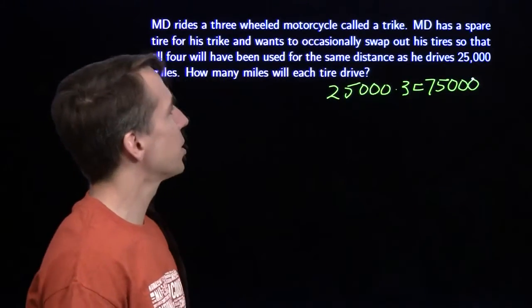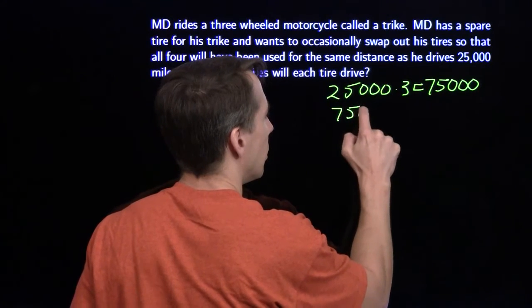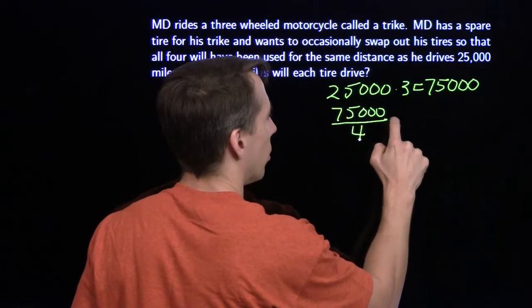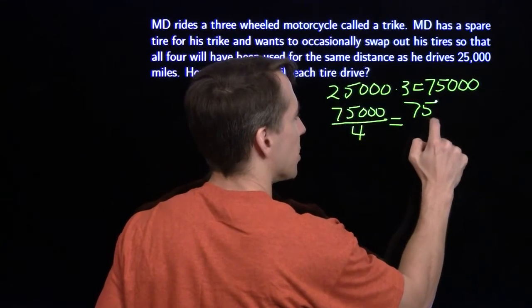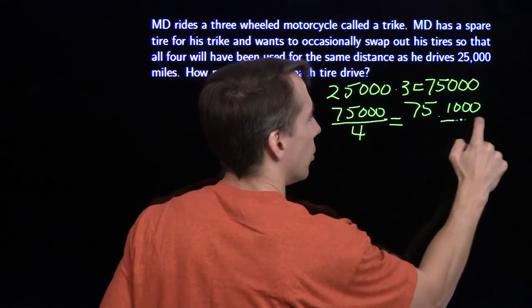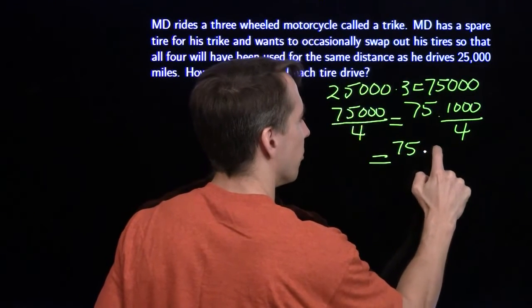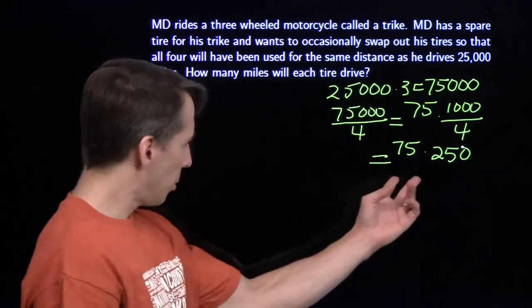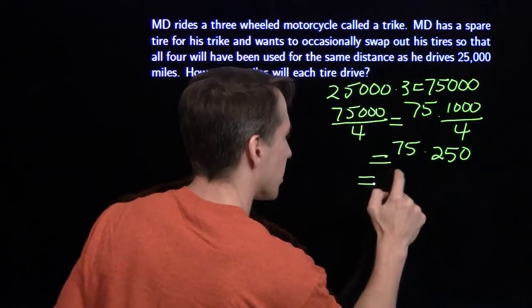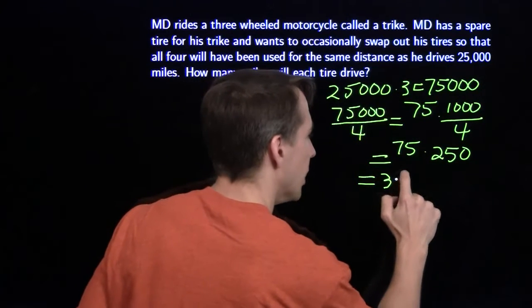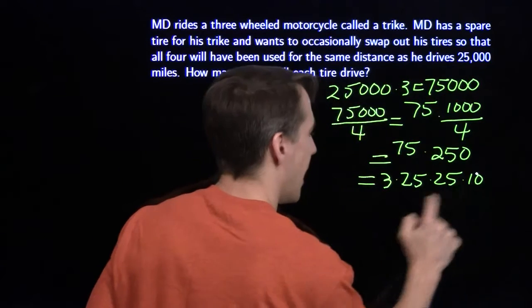I'm going to spread that out across four tires. So I'm going to take my 75,000 and divide it by 4. I'm going to simplify this a little bit first. I'm going to split this up into 75 times 1,000 over 4. It's going to give you 75 times 250.